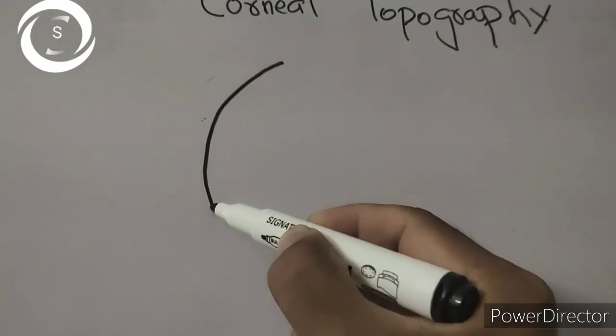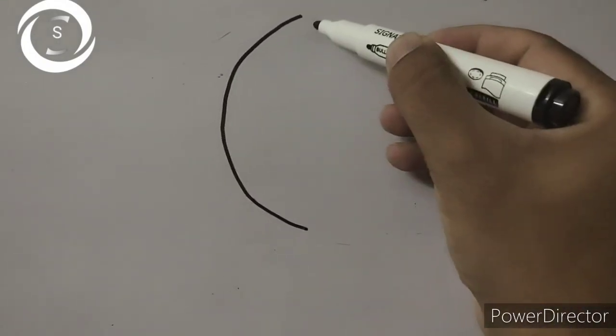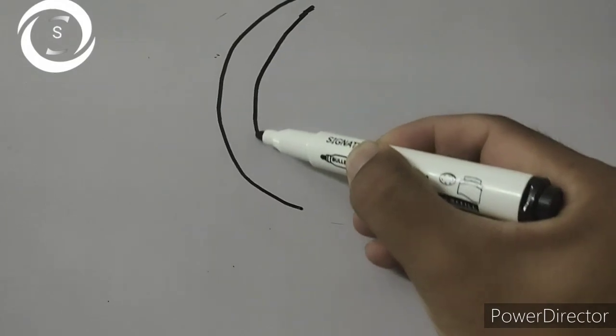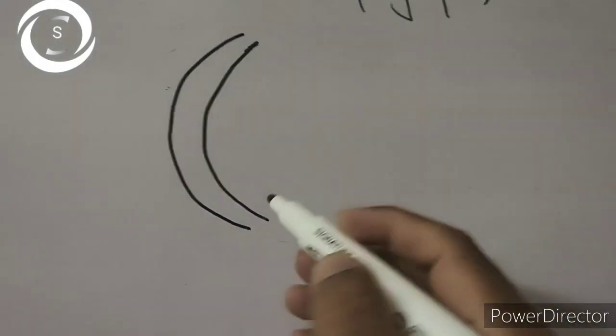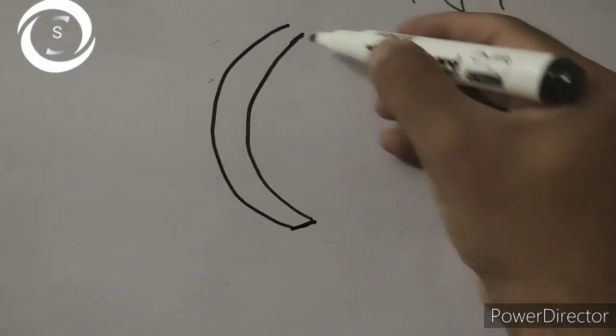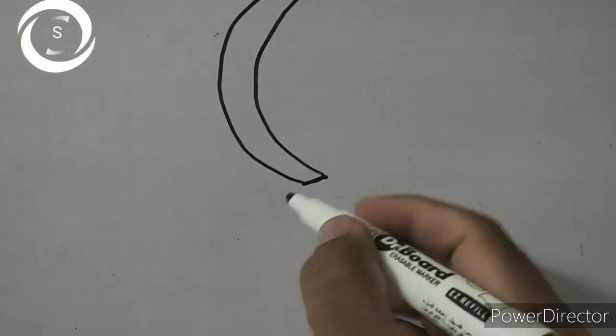Let's come to the first video of corneal topography. I am drawing the cornea, the anterior surface of the cornea and the posterior surface of the cornea, and in between the corneal stroma.